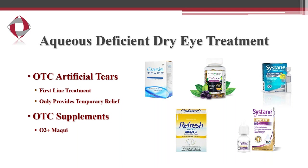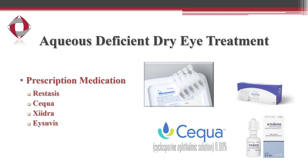Moving on to treatment options — we always try to start with something over the counter. Artificial tears is the first-line treatment. I've had a lot of success with Oasis Tears, and for less severe cases, artificial tears are sufficient enough to manage a patient's symptoms. Over-the-counter supplements — I've had a lot of luck with Vitacyte O3 Plus MacuClear. This dry eye supplement contains omega-3s, which help with inflammation, and has a MacuClear berry extract that is helpful for reducing inflammation, improving the function of the lacrimal gland, and helping stabilize the tear film.